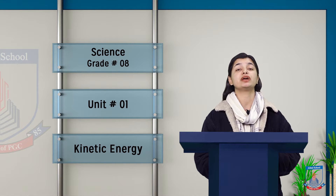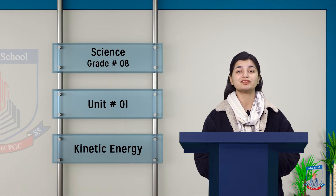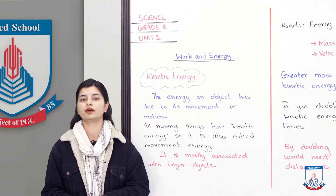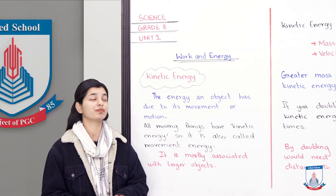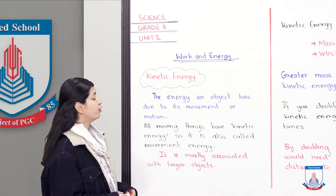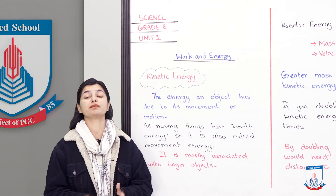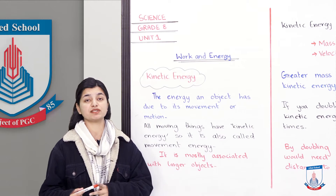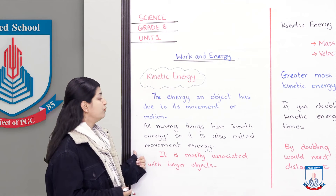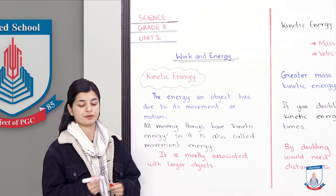Let us talk about what kinetic energy is and what are the different formulas. Kinetic energy is the energy an object has due to its movement or its motion. That energy that is because of any object in its movement or its motion, we call it kinetic energy. All moving things have kinetic energy, so it is also called movement energy.